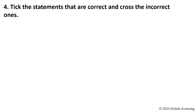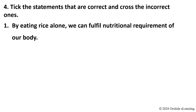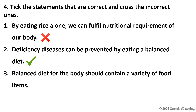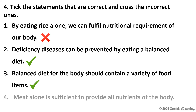Tick the statements that are correct and cross the incorrect ones. By eating rice alone, we can fulfill the nutritional requirement of our body — Wrong. Deficiency diseases can be prevented by eating a balanced diet — Correct. Balanced diet for the body should contain a variety of food items — Correct. Meat alone is sufficient to provide all nutrients of the body — Wrong.